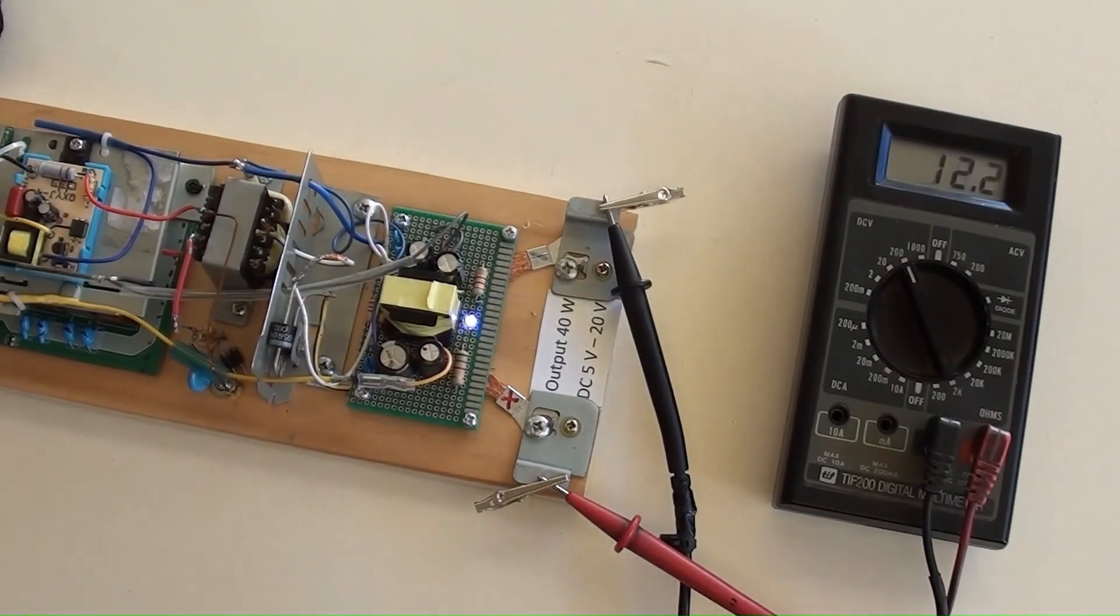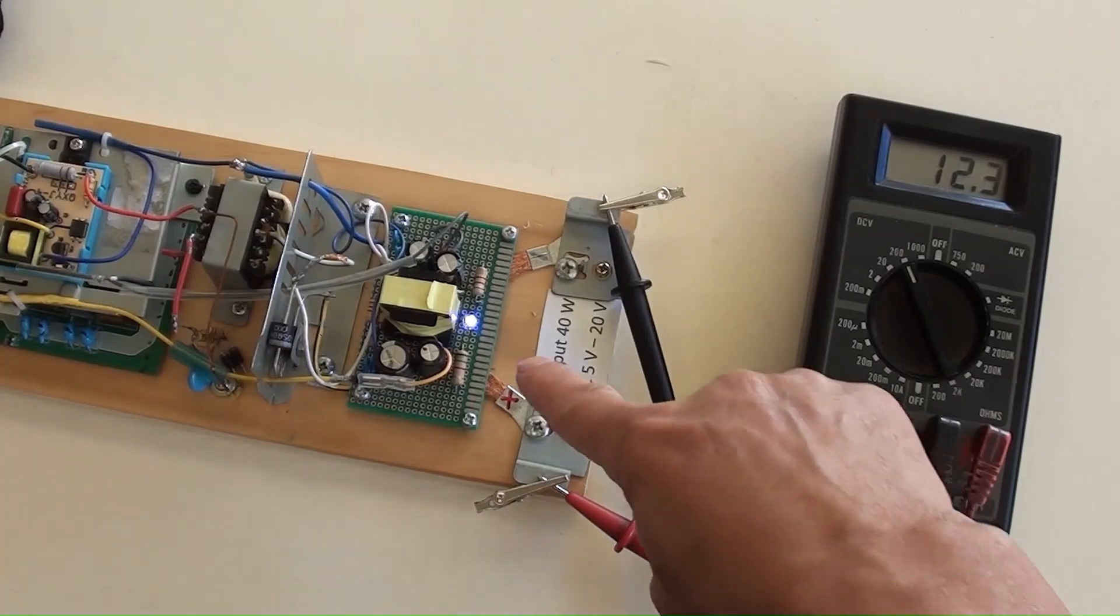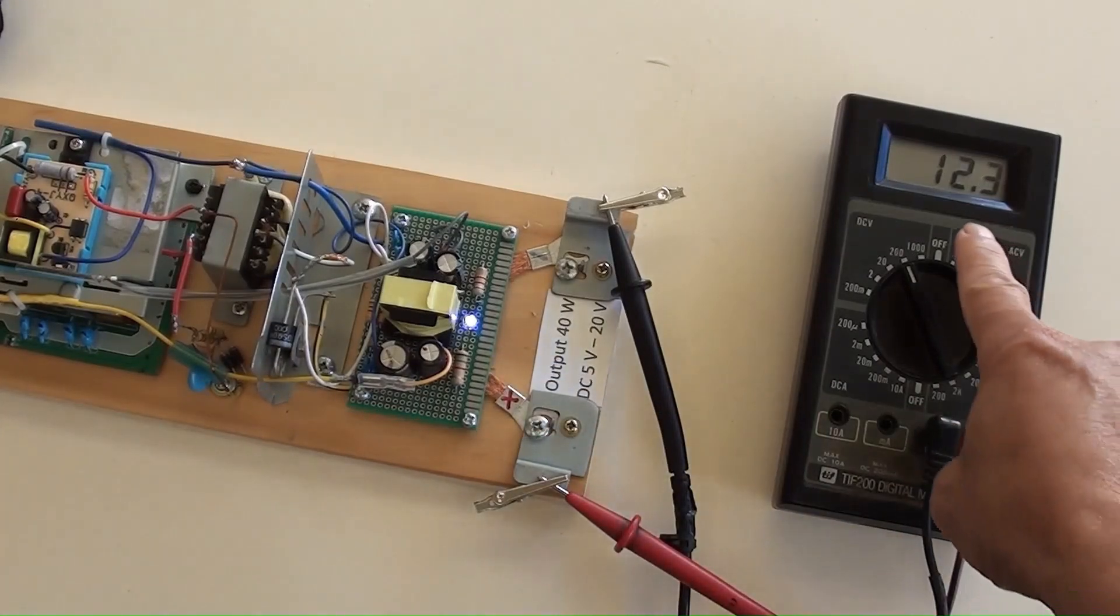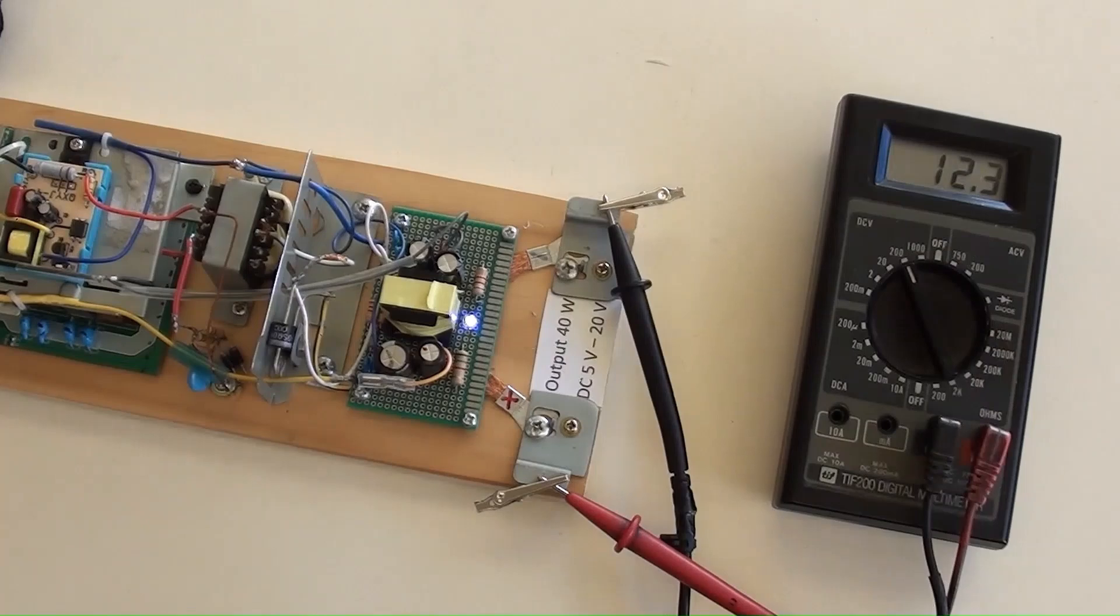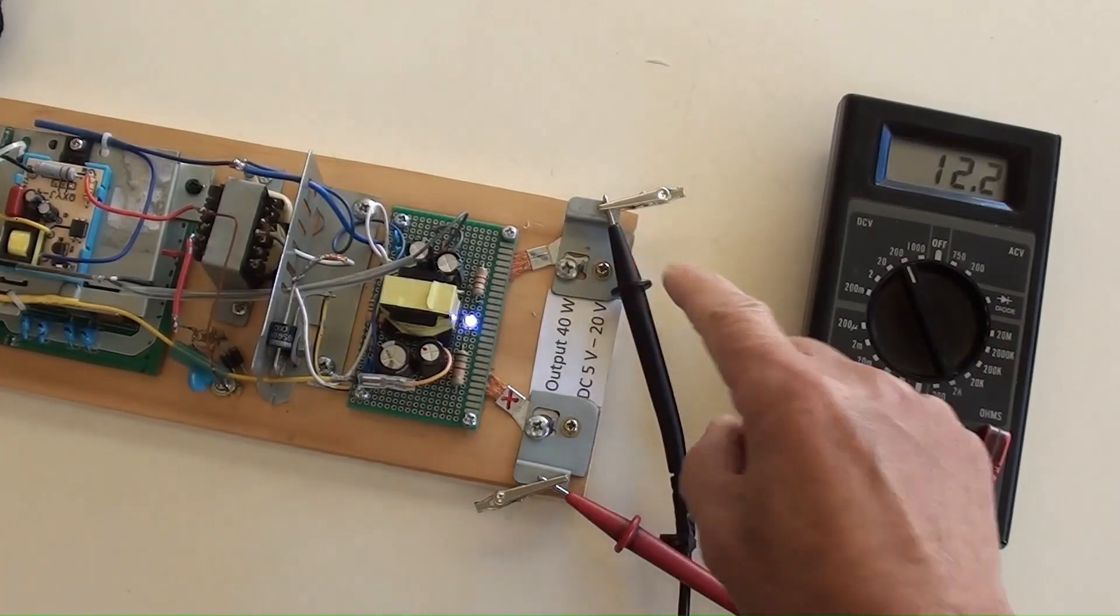Switched the power on. A LED indicated the power has been on. DC 12.3 volt indicated by the multimeter, which is the output voltage from this DIY power supply.